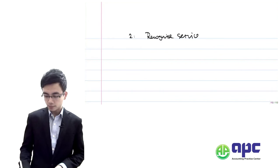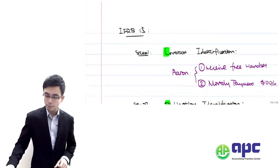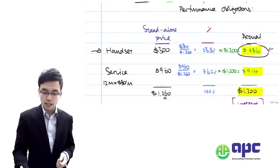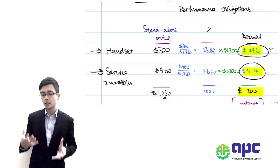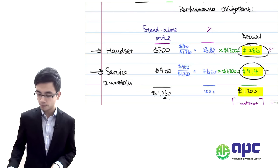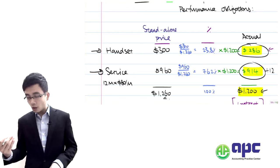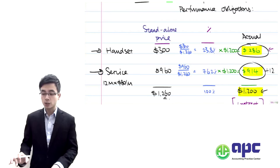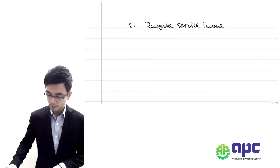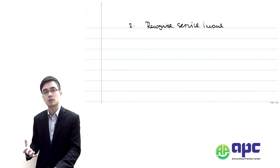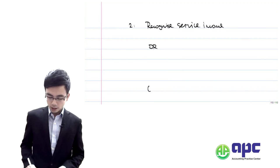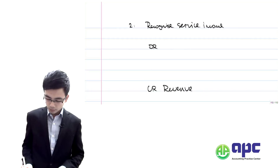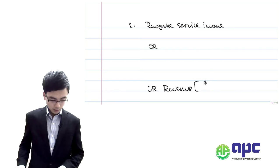Secondly, we recognise the service income. From step four, total service income is $914 over 12 months. So the income to recognise each month is $914 divided by 12, giving us $76. Rather than using $1,200 divided by 12 as in IFRS number 18, we use $914 divided by 12. Each month we credit revenue of $76.